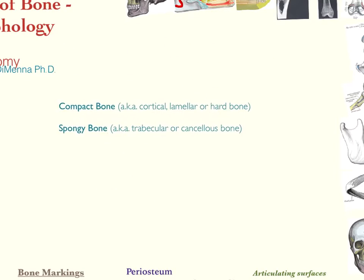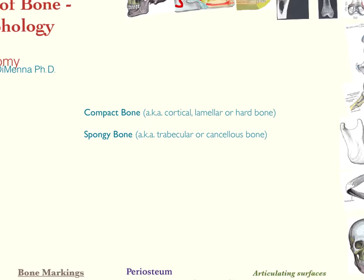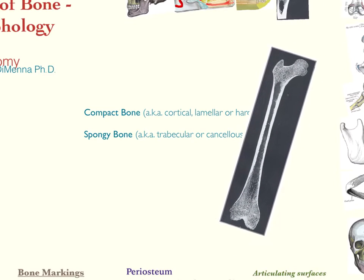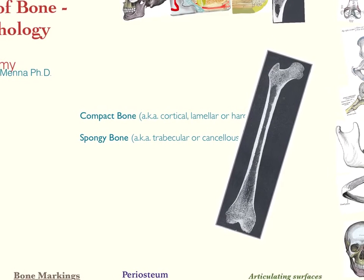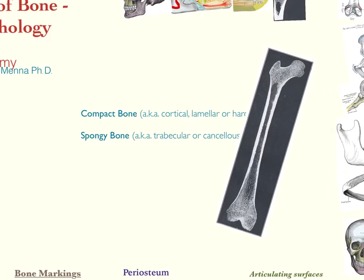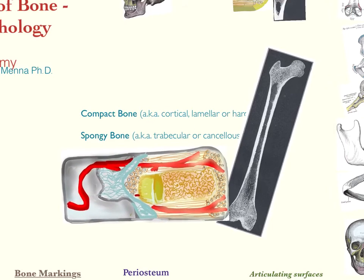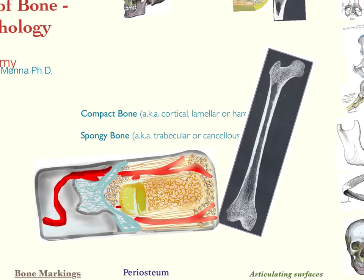The first thing you need to know about macro structures of bone are the divisions between compact bone and spongy bone. Compact bone, also known as cortical, lamellar, or hard bone, is shown here on the outside — this really dark, white-striped part of the bone. It's also shown in this cartoon, representing all these little dotted structures, which we'll look at later. So that's the thick part of bone.